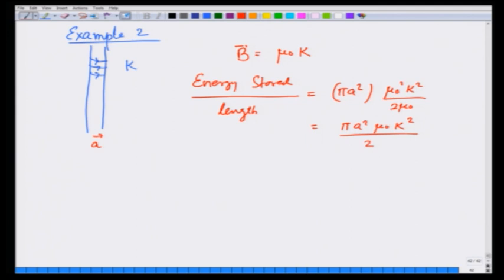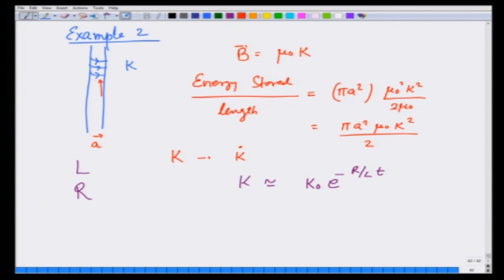Now let us switch off the current k at a rate k̇, so that it slowly goes to zero. If this inductance is L and the resistance of the coil is R, then k goes down like k₀ e^(−R/L · t). Our main concern is that as k is switched off, the magnetic field changes, and therefore by Faraday's law, ∇ × E = −dB/dt, it will produce an electric field.